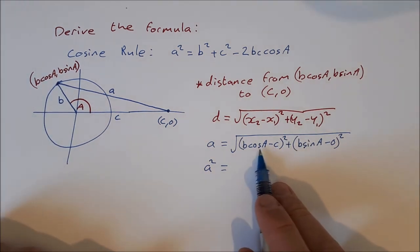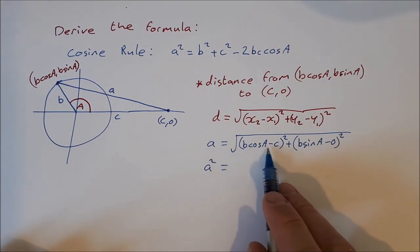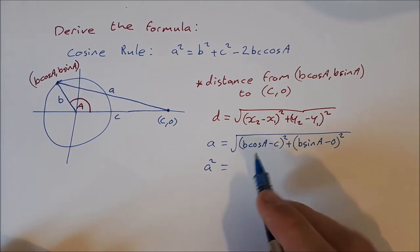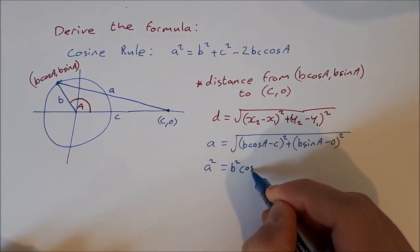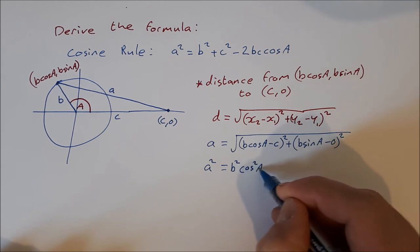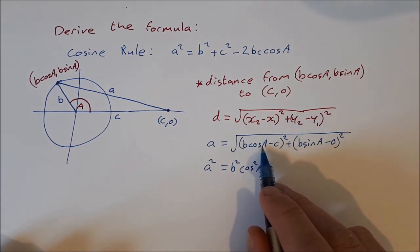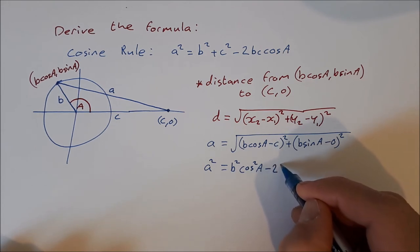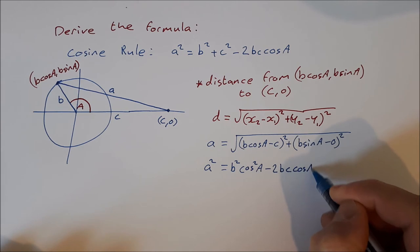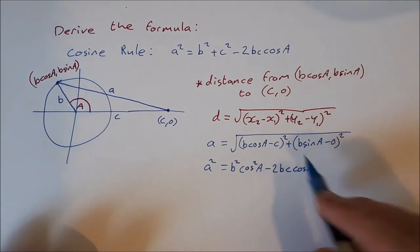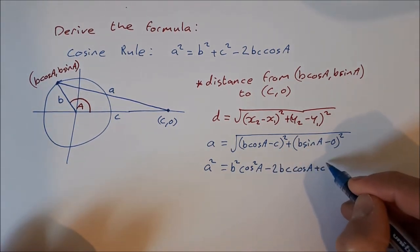So b cos A minus c, square the first, so that's b squared cos squared A, twice the product, so minus 2bc cos A, and then the square of the second, plus c squared.